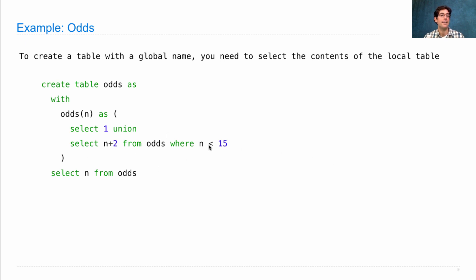Now, this does define an odds table, but it's not in the global namespace. Nobody else can refer to it except for this select statement. So the way to give it a global name is to select its columns from the local odds table and create a new table called odds, which is accessible from everywhere.